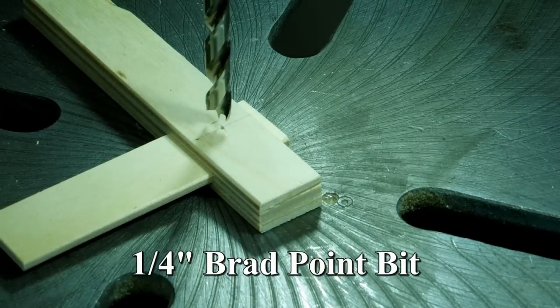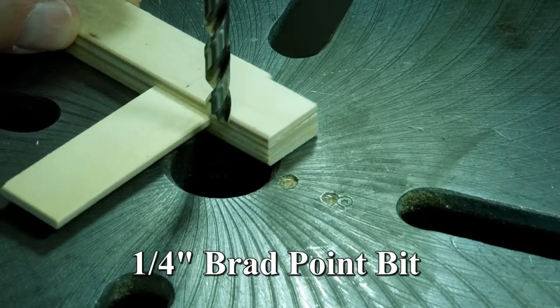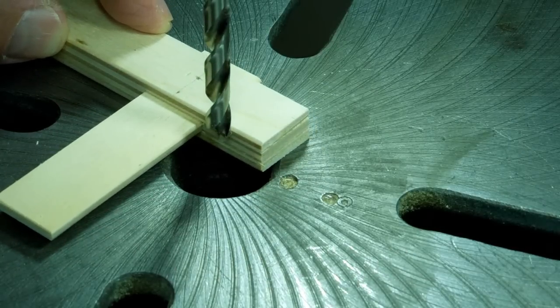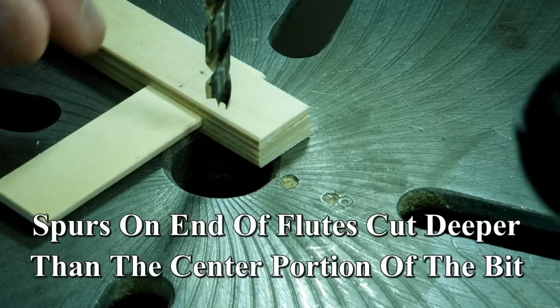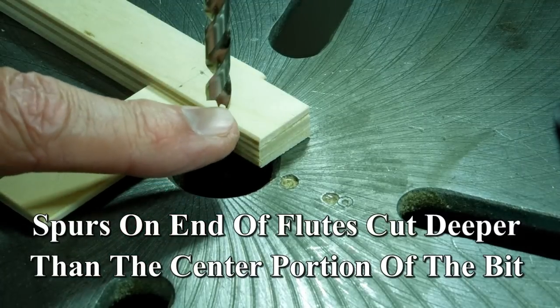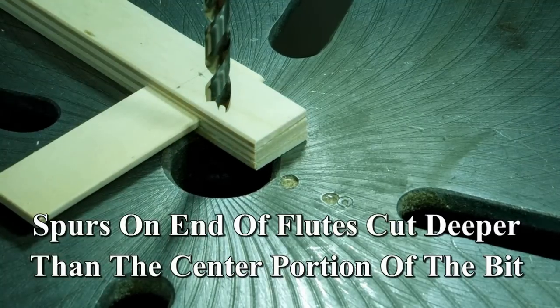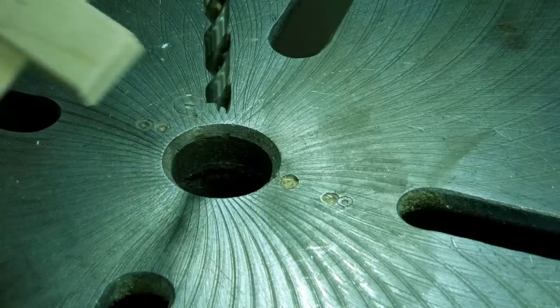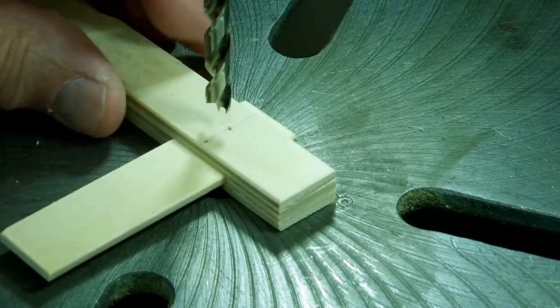With a ¼ inch bit, you want to set your drill stop so it doesn't quite penetrate that ⅛ inch plywood. That's easier said than done because of the flutes on this brad point bit. And I stick a piece of ¾ inch in the slot to act as a backer.